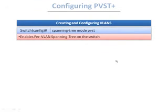Now let's look at the commands to configure per-VLAN spanning tree. In global configuration mode, you can type 'spanning-tree mode PVST' to tell the switch to run per-VLAN spanning tree protocol. Note that per-VLAN spanning tree was created by Cisco and is the default spanning tree mode on switches, so you don't need this command unless you are switching back from another mode.